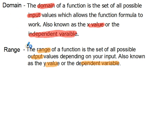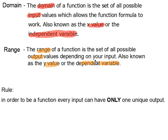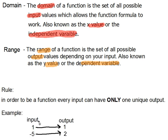Domain is the x-value, range is the y-value, domain is the independent variable, and range is the dependent variable. Here's a rule: in order to be a function, every input can have only one unique output. That means every time you put a number in, it can only give you one number out. For example, if my input is one, every time I put in one I get one out; every time I put in negative five I get two out.